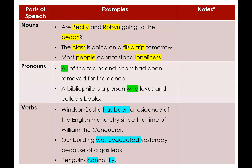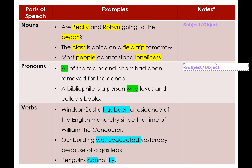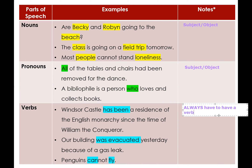The most important three parts of speech are nouns, pronouns, and verbs. Take a look at the first example sentence: 'Are Becky and Robin going to the beach?' This is a complete sentence. Nouns and pronouns function as the subject or object of the sentence, and verbs indicate actions or conditions — you always have to have a verb for a sentence to be a sentence. Without a verb, you have a fragment.